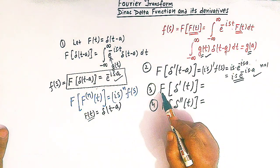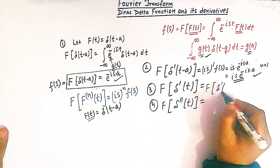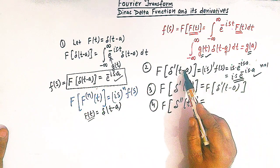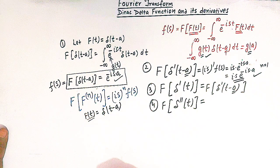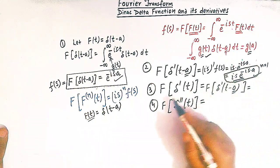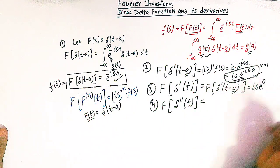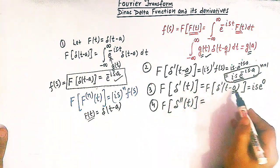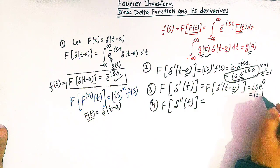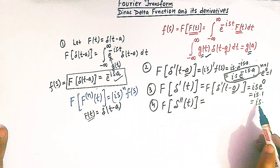For the Fourier transform of delta prime of t, this can be written as the Fourier transform of delta prime of t minus 0, so a equals 0. Taking a equal to 0 in the previous expression, we get i times s times e raised to 0. Since e raised to 0 equals 1, the Fourier transform of delta prime of t is simply i times s.